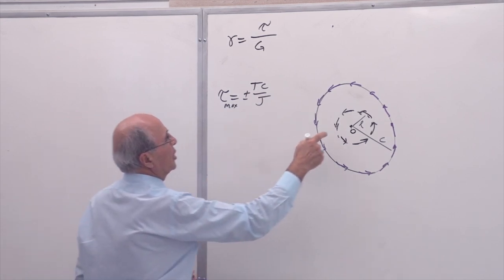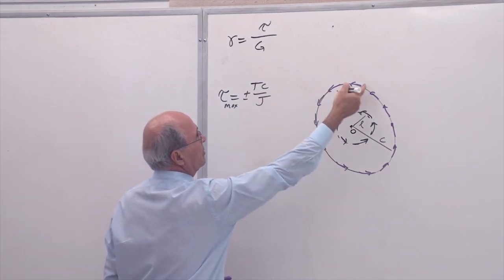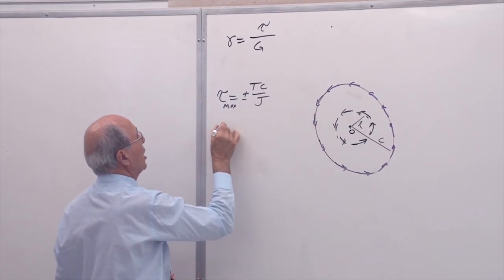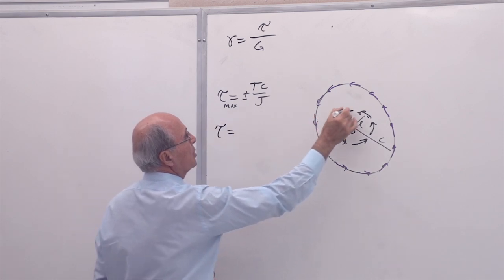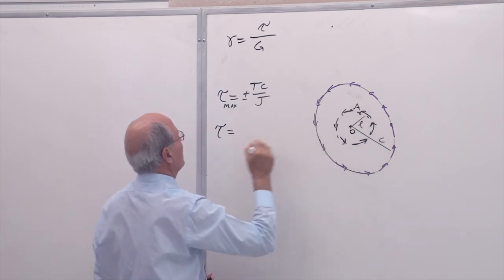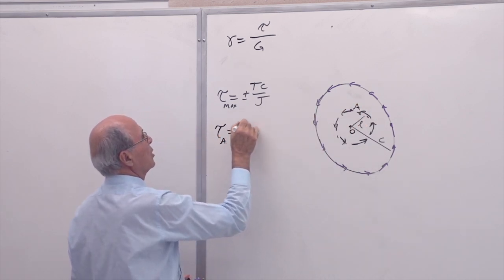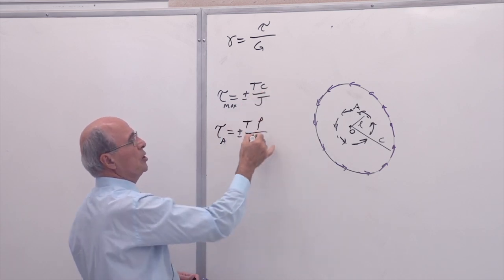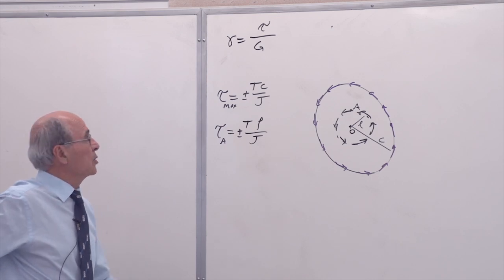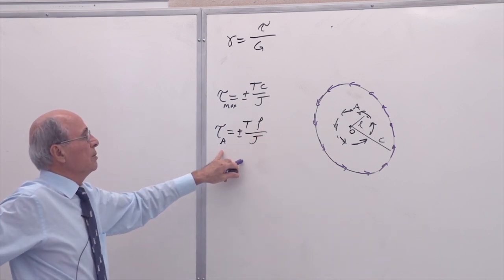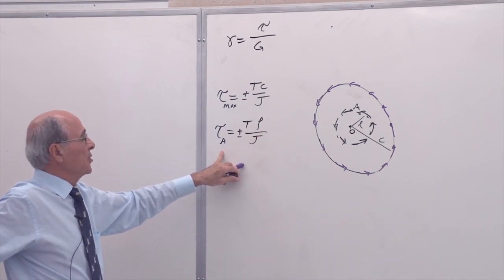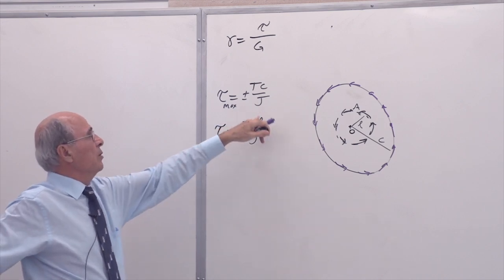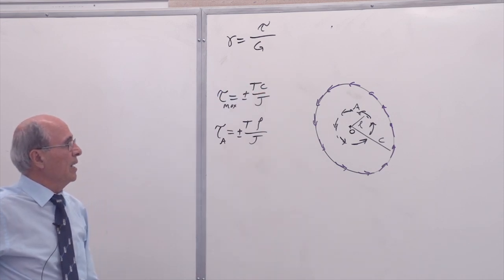For the outside, which is the maximum, if you're looking at any interior point A, tau at A equals T*rho over J. So you change C to rho and you have your stress there. When rho equals zero, at the center of the shaft, shear stress is zero. When rho becomes C, you get the highest value.